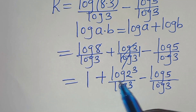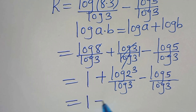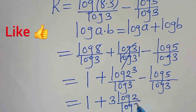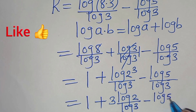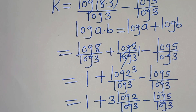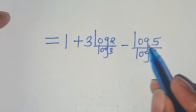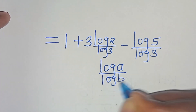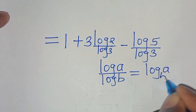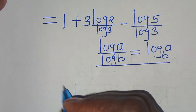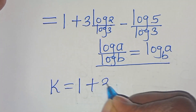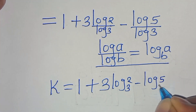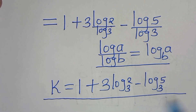Since 8 = 2³, we write log(8) = log(2³) = 3·log(2) by the power property. Also, log(a)/log(b) = log_b(a). Applying these, k = 1 + 3·log₃(2) − log₃(5). This is the value of k.